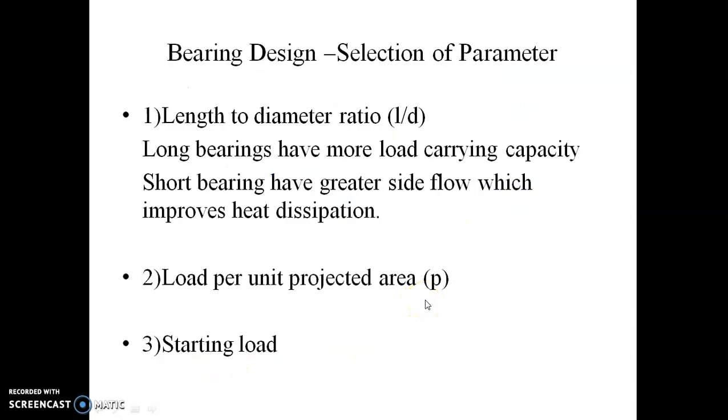Next is the bearing design, that is the selection of parameters. In the design of bearing it is required to select suitable values for some important parameters. First one is length to diameter ratio. In design of bearing diameter is known from the shaft strength consideration, so it does not depend on the bearing capacity. So bearing length is the only parameter that designer has to select. L by D ratio affects the performance of the bearing. If the long bearing is there it has more load carrying capacity. On the other hand the short bearing, that is L by D ratio is small, then it has improved heat dissipation because side flow is more.